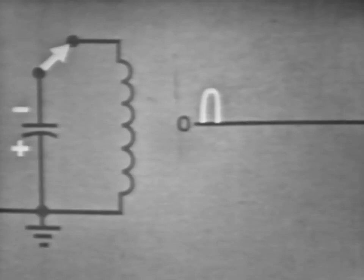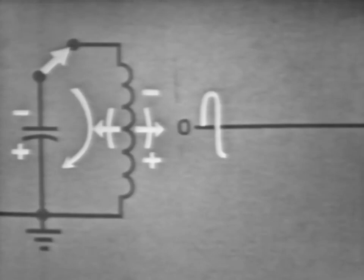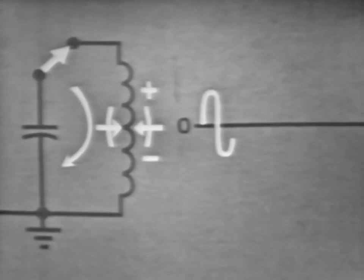And it will again discharge through the coil. As current begins to increase, the field about the coil expands. Now, notice that current is flowing in the opposite direction. So we'll show this on our graph. At some point, current will begin to decrease. And when it does, the magnetic field will start to collapse, reversing direction and returning energy to the circuit, which will cause the capacitor to recharge in the original direction.